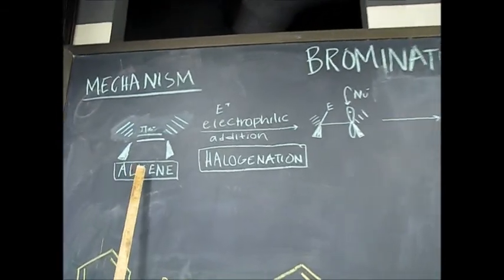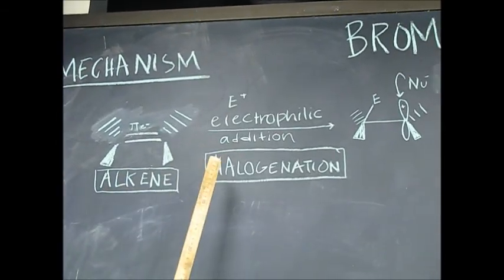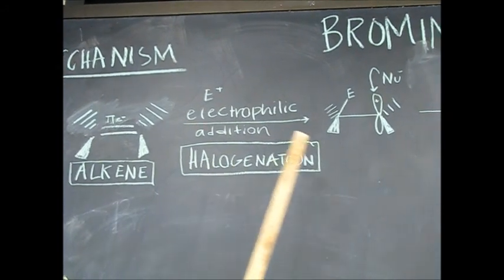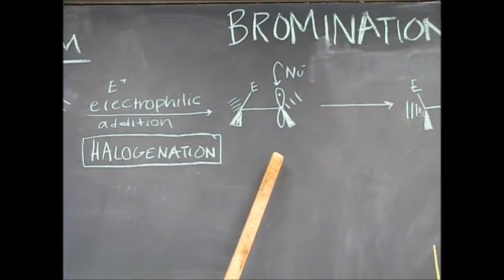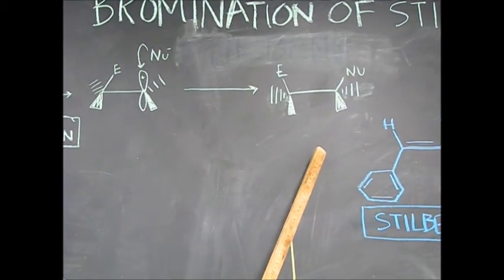So the pi bonds on an alkene are going to attack an electrophile, producing a carbocation, which is attacked by a nucleophile, ending in a substituted alkene.